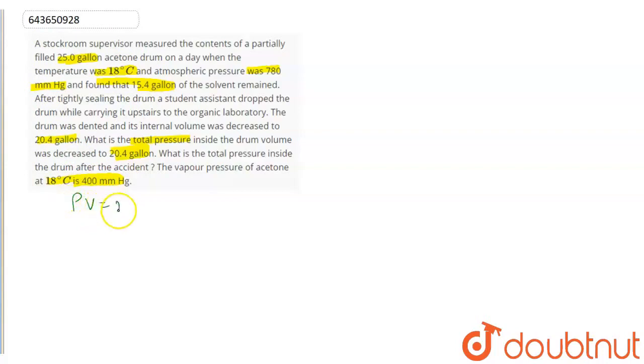Now we will use the ideal gas equation. PV equals nRT. In our drum drop, the number of moles is fixed, R is the gas constant, and temperature is fixed throughout the process. So these are all constant terms.